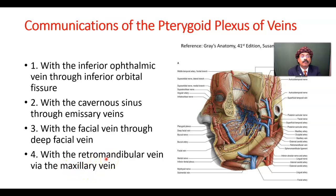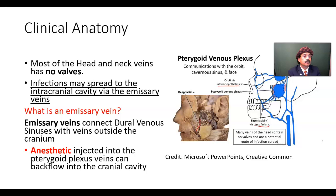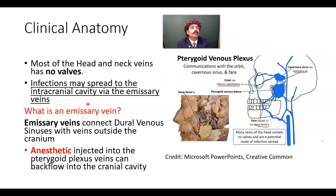The retromandibular vein is formed by the superficial temporal vein and the maxillary vein. Most of the head and neck veins have no valves — this is very important. Only the external jugular vein has a valve, but that does not prevent regurgitation of venous blood from the subclavian vein to the external jugular vein. But most of the head and neck veins have no valves.